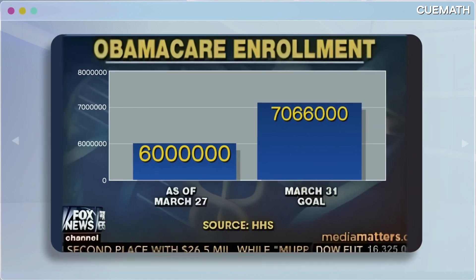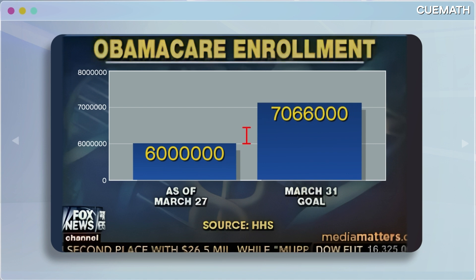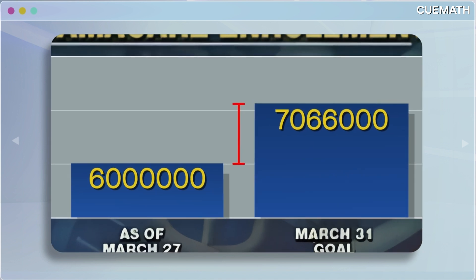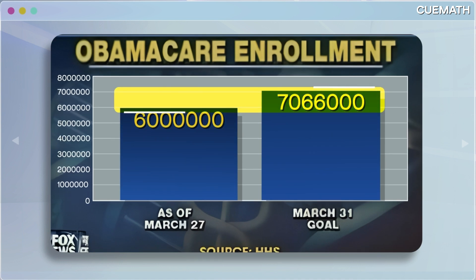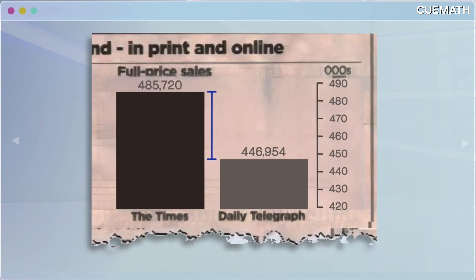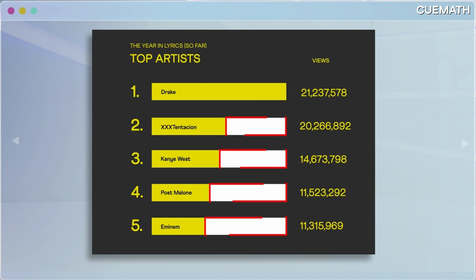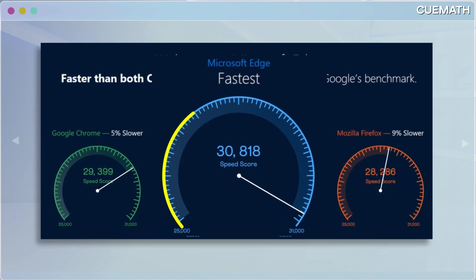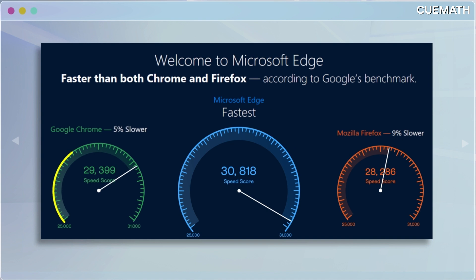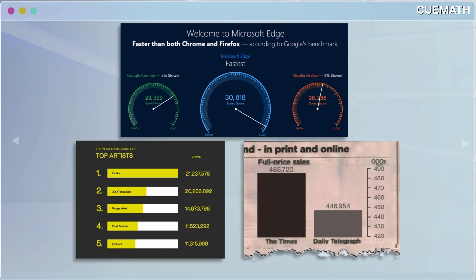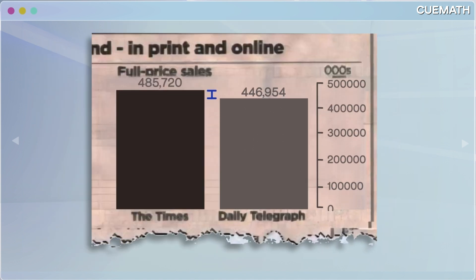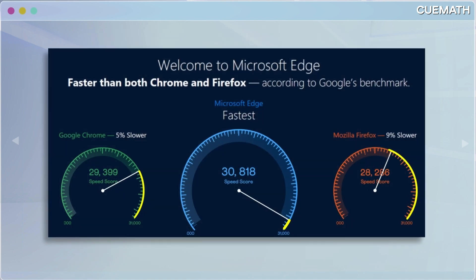Like this one, which shows the number of people that signed up for Obamacare compared to the goal. It seems like more than half of the goal is yet to be achieved, but actually the difference is small. Here are a few more — one exaggerates the sales gap between the Times and the Daily Telegraph, another shows Drake outperforming every other artist by a huge margin, and this speedometer suggests Microsoft Edge is way faster than Chrome and Firefox. All with exaggerated differences.